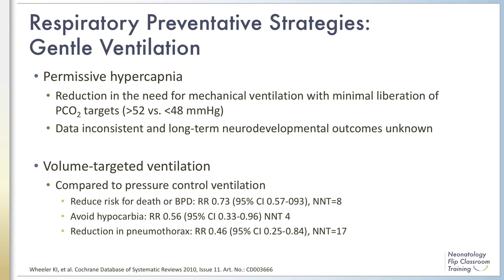The oxygen-hemoglobin dissociation curve shows that hypercarbia also increases oxygen unloading in the tissue by shifting the curve to the right. The current understanding is that hypercarbia at a moderate level is not associated with adverse events, as opposed to hypocarbia, which is associated with periventricular leukomalacia, hearing loss, and overdistention of the lungs. Minimal liberation of PCO2 targets — that is, over 52 versus less than 48 mmHg — has been shown to reduce the need for mechanical ventilation. However, the data supporting this strategy have been inconsistent, and long-term neurodevelopmental outcomes remain unknown.